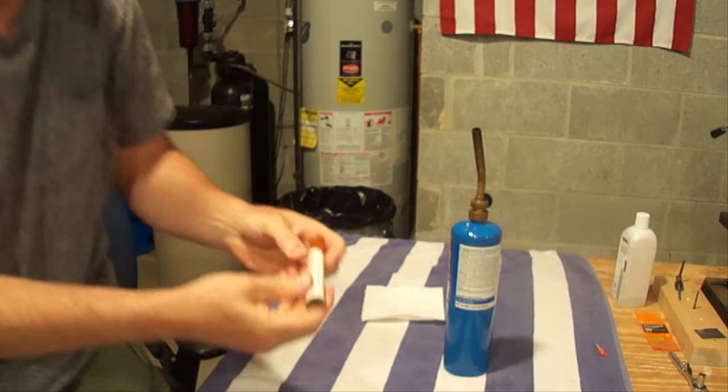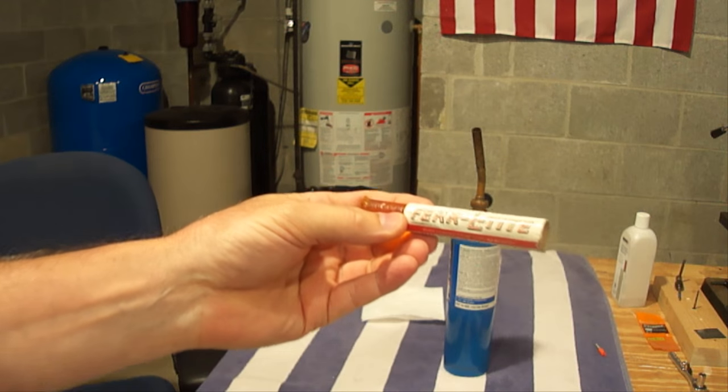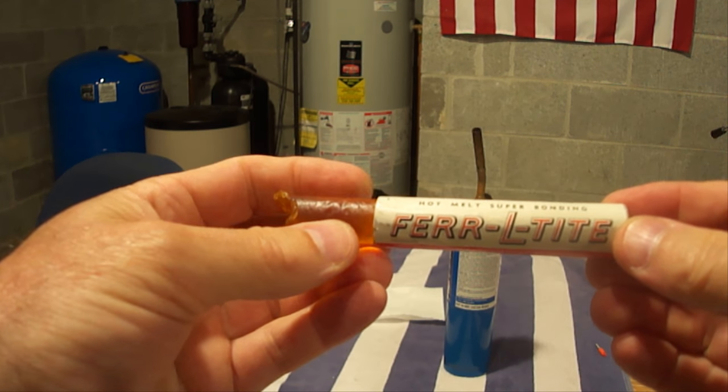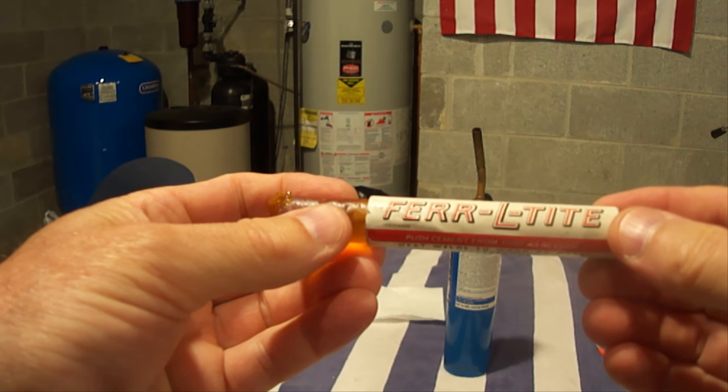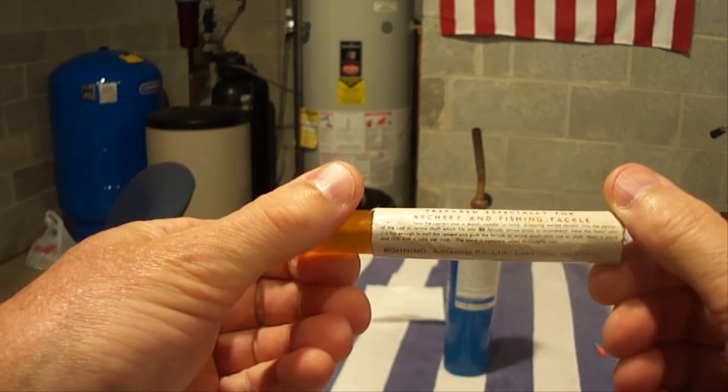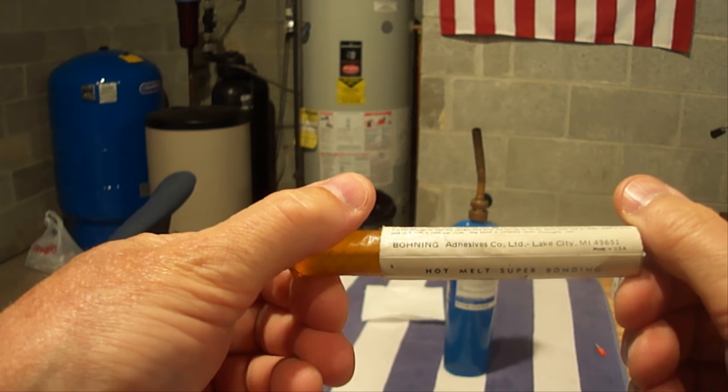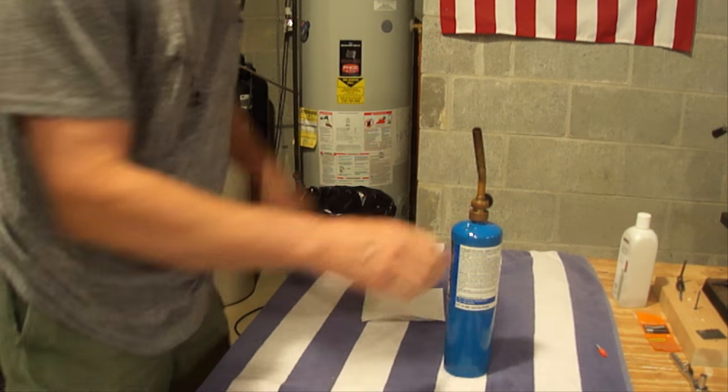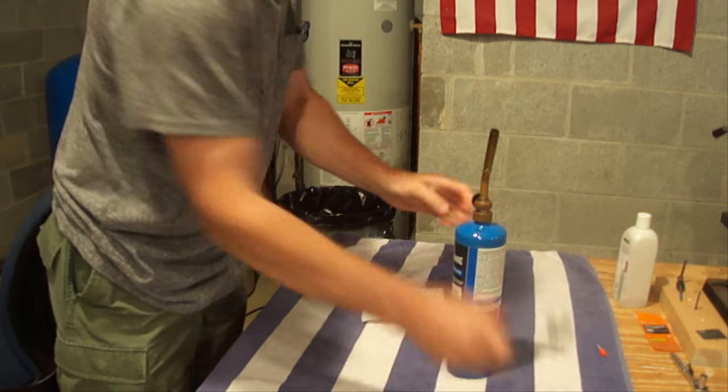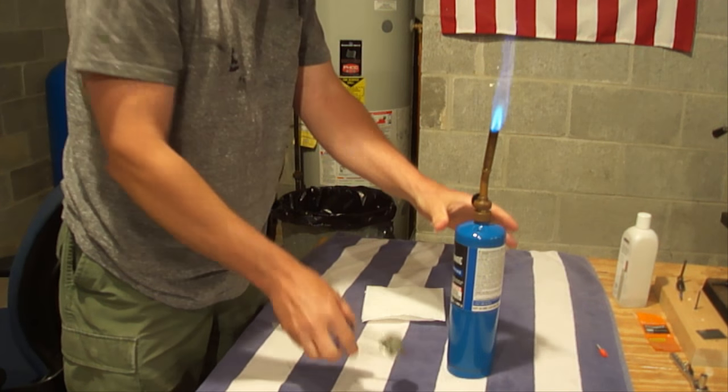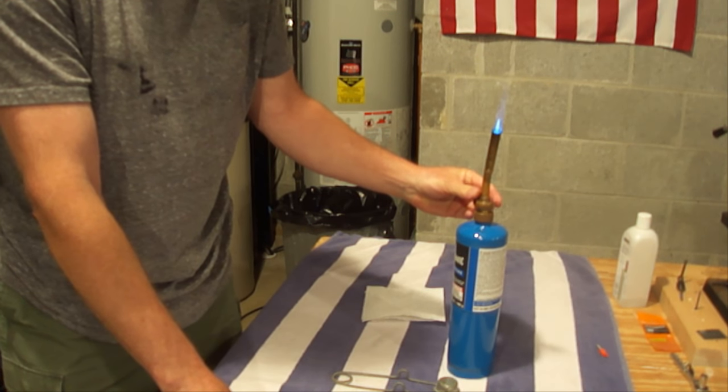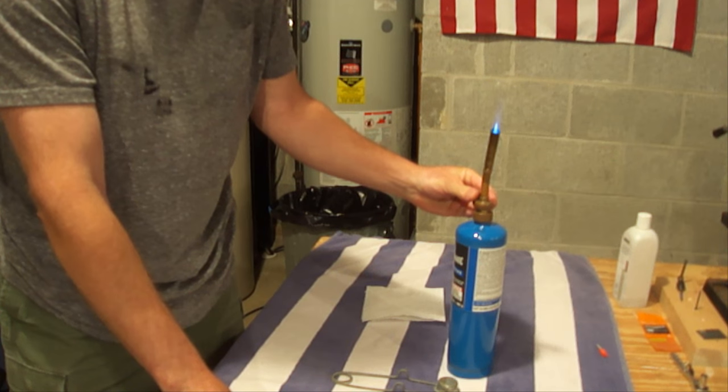So I prefer to actually just take a field tip and just screw it in. And then just hold on to the field tip with your pliers. Now what I'm using here, this is called Ferrell Tight. And this is a hot melt. It's waterproof. It's made by Bohning. And it's all I've ever used. It's really great stuff. So I would highly recommend that.